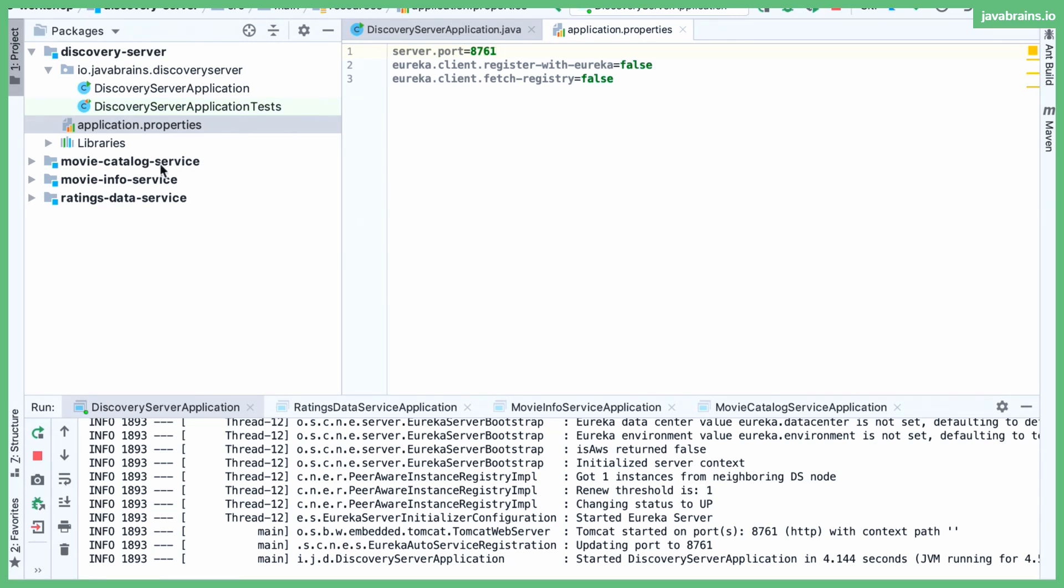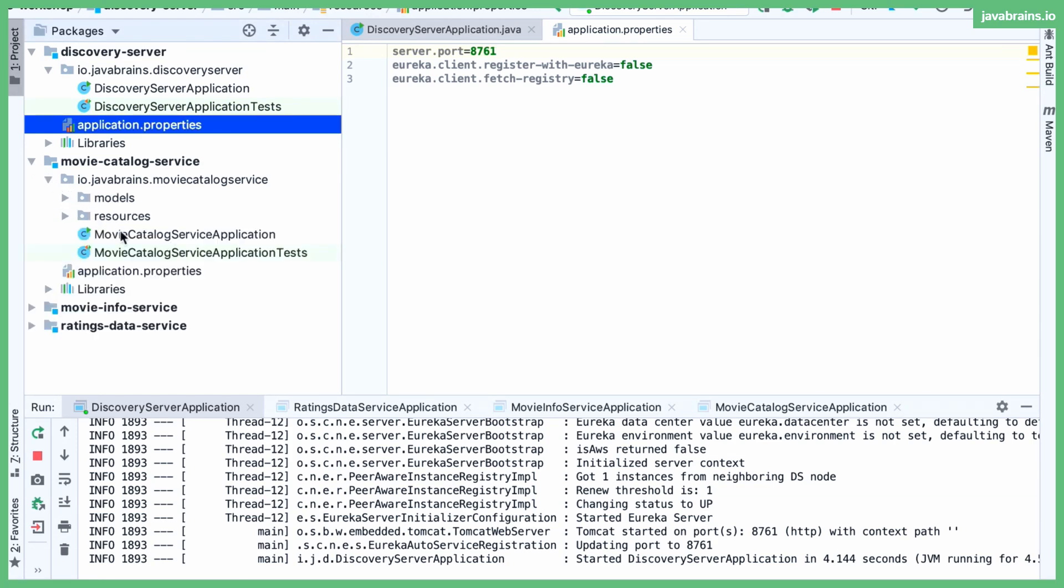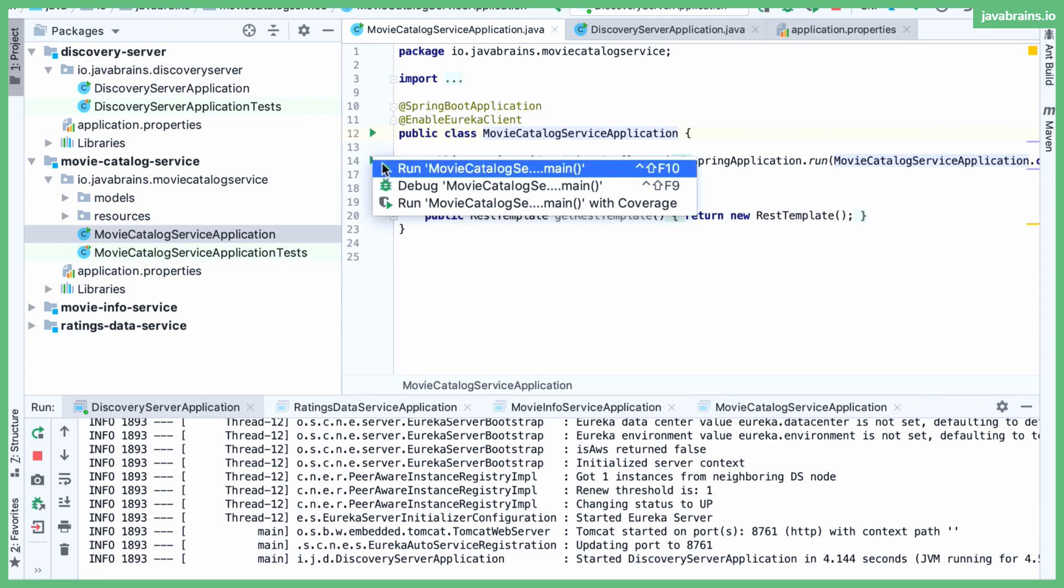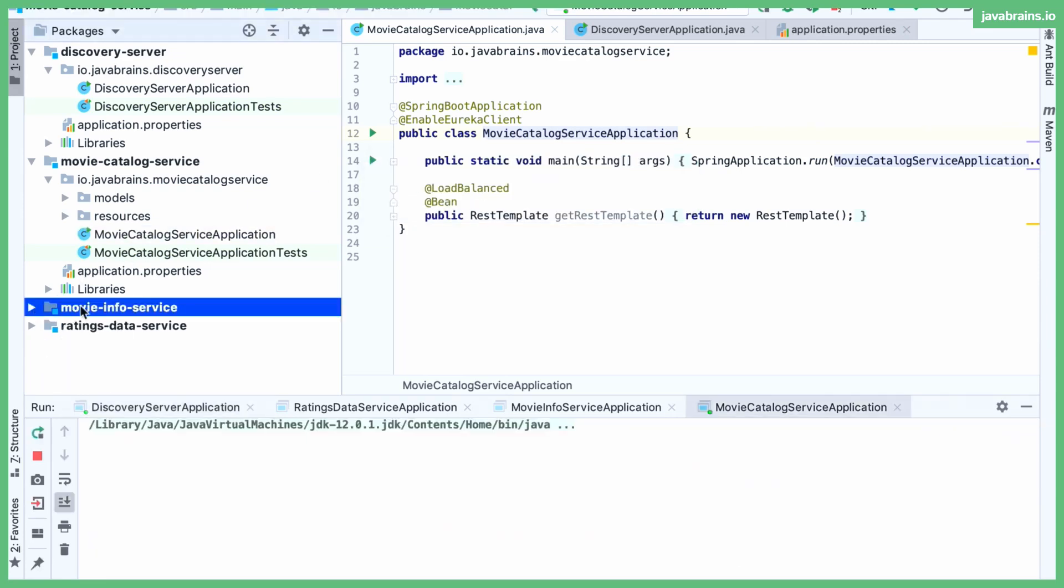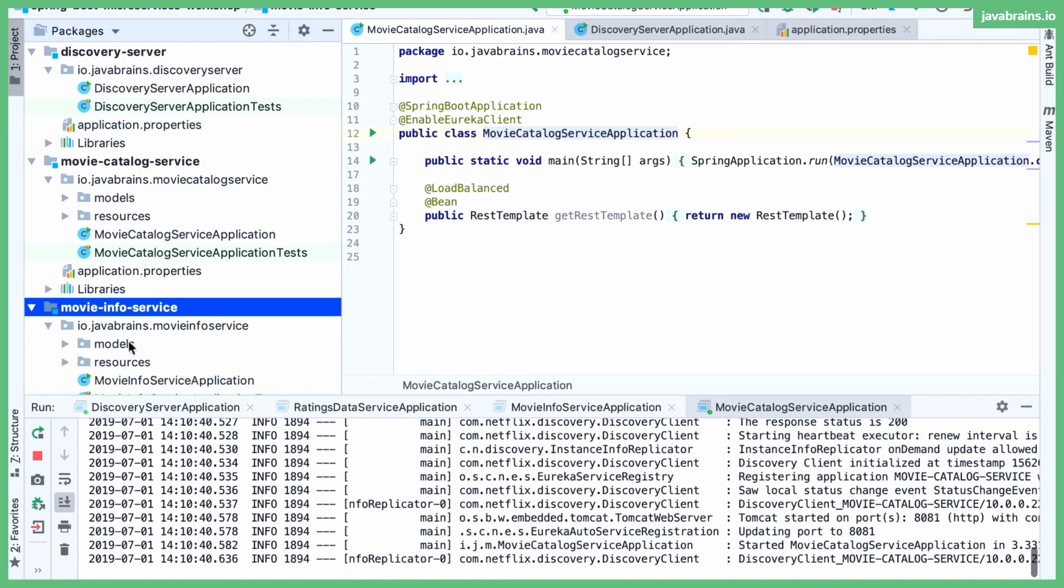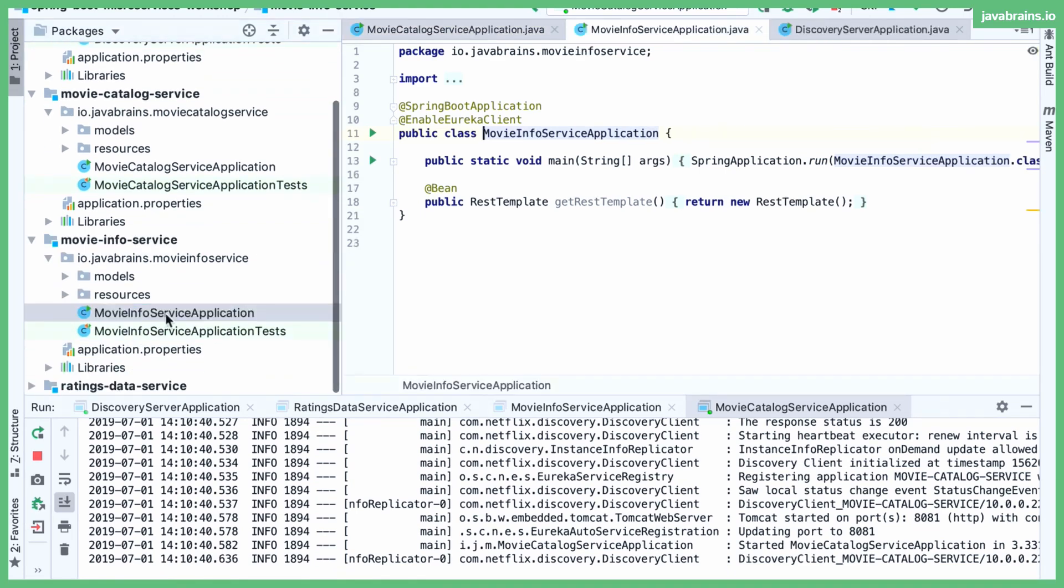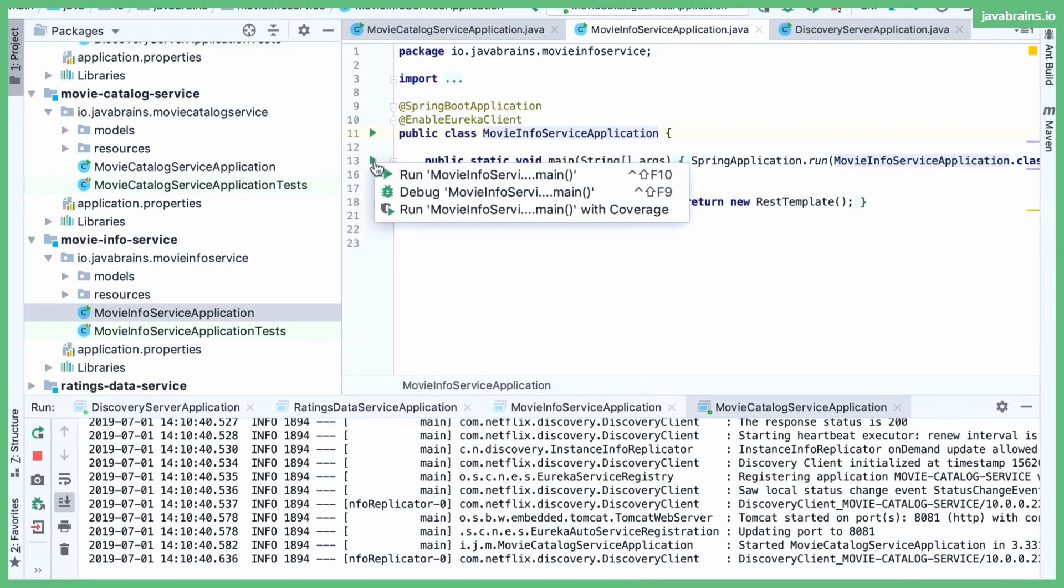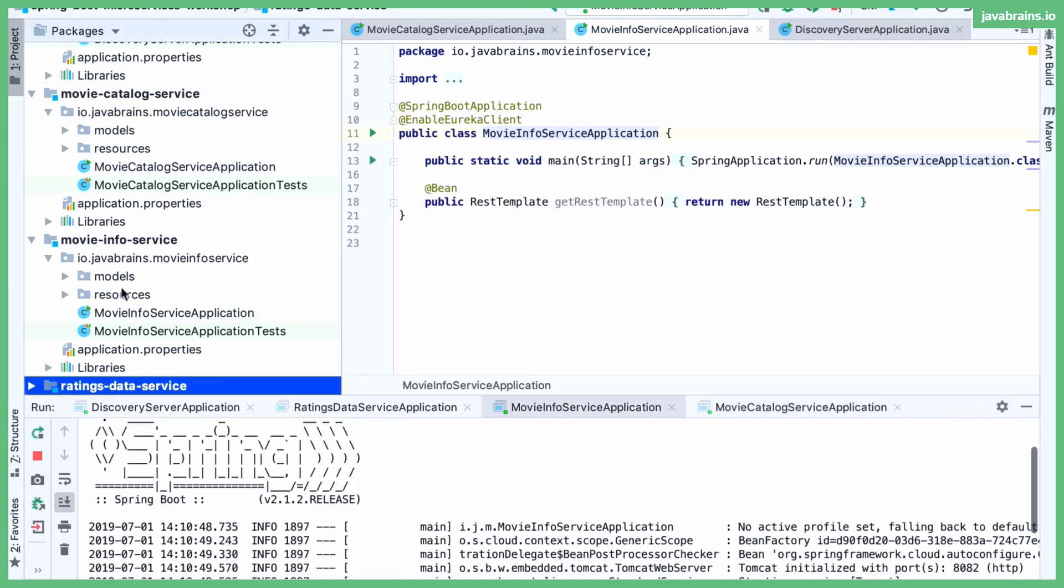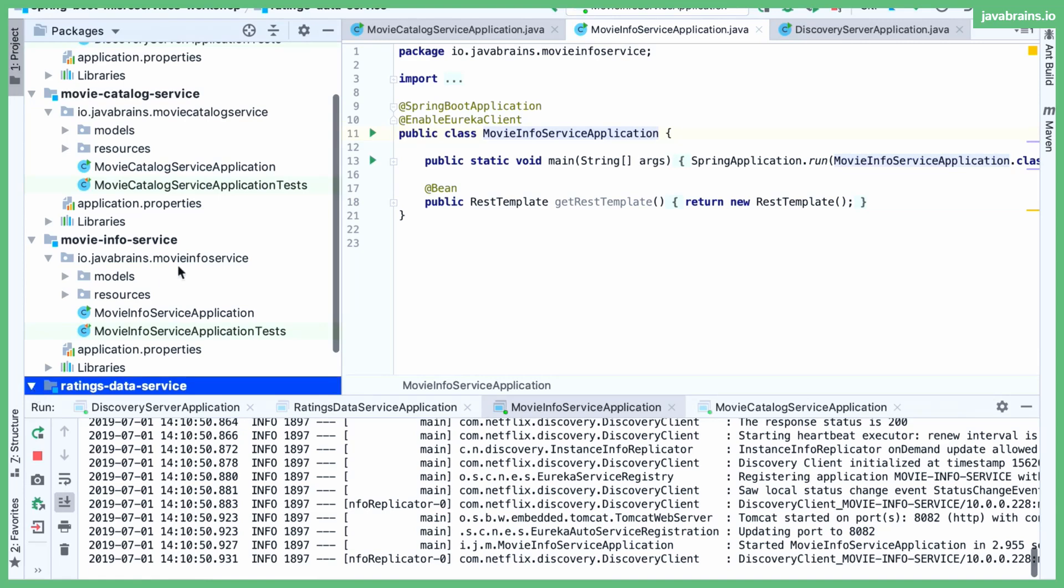Now what I'm going to do is quickly start up all these other services, the movie catalog service, which is like the main service which orchestrates the other things. All I need to do to start a service is to just run the application class, Java class, just run the main method. And I'm going to do that for these two services as well, the movie info service and the ratings data service.